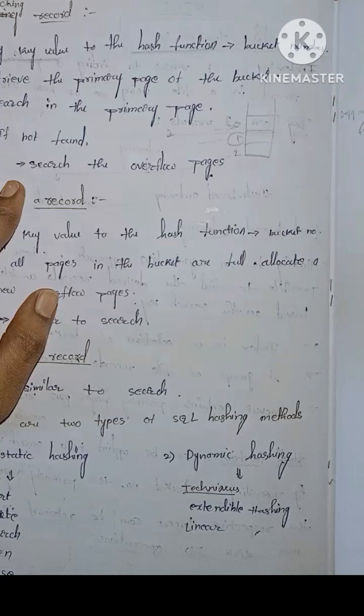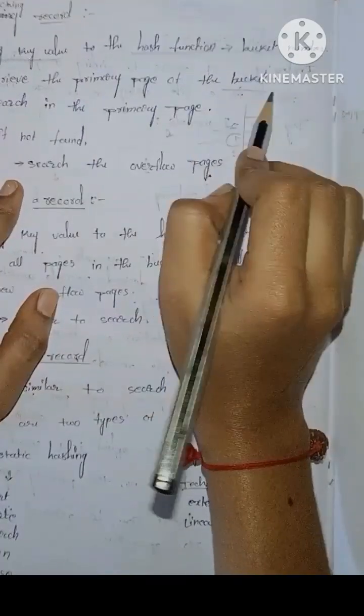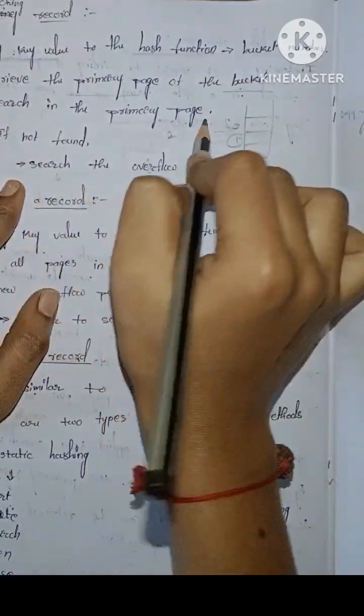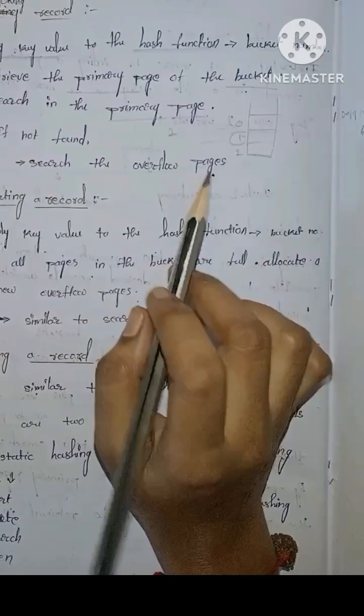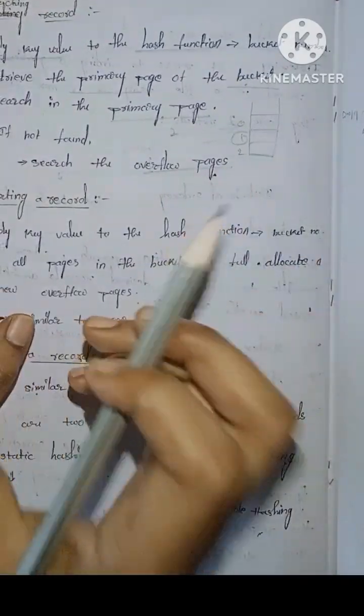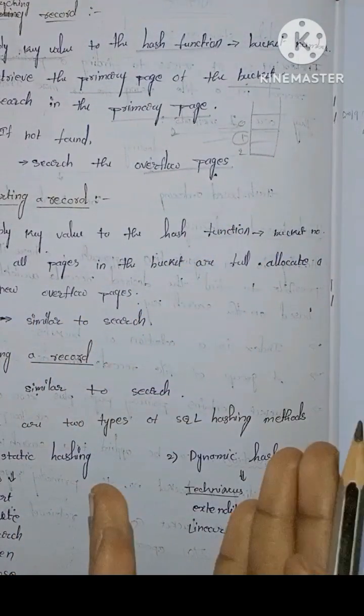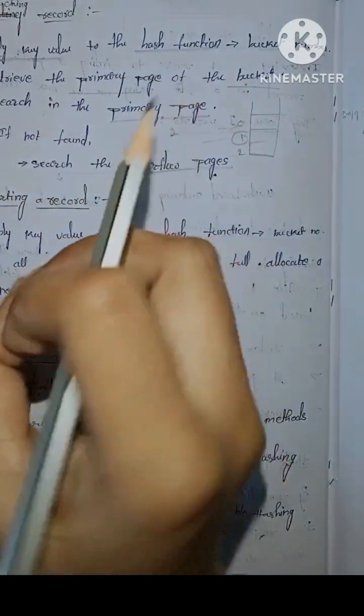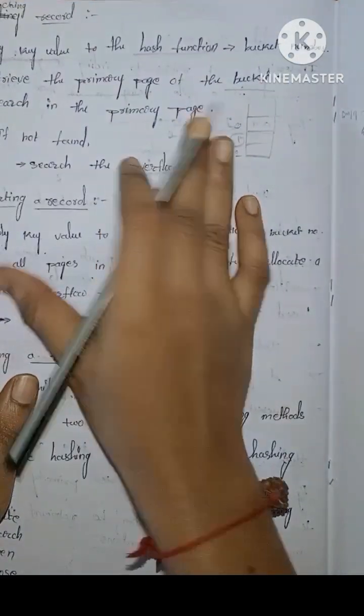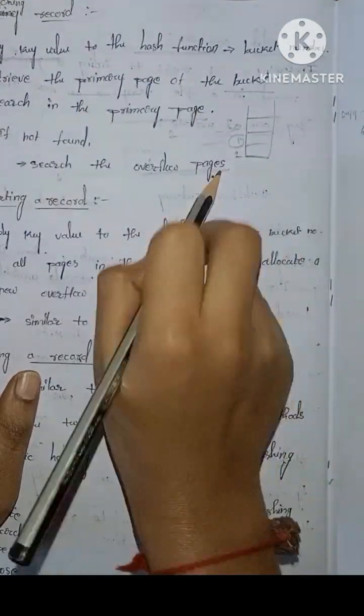We apply the key value to the hash function. Retrieve the primary page of the bucket. Search in the primary page. If it is not found, search the overflow pages. If it is found in the primary pages, if not found, we will search the overflow pages.